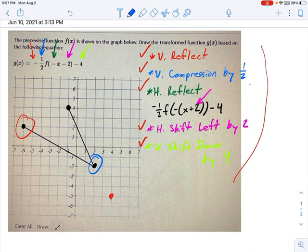Now, vertical reflection of this dot. That's going to move it to this location. Done. Vertical compression by one-half. That's going to move it to this location. Done. Horizontal reflection. That's going to bring it over to this side. Done. And let's get rid of some of those things.